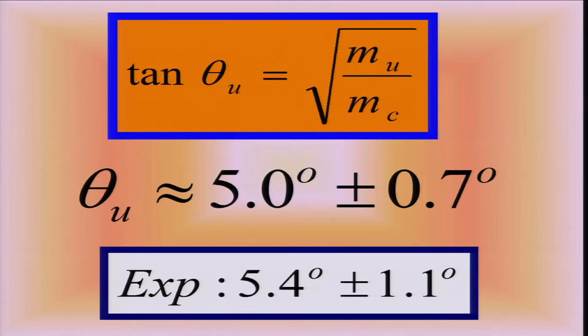From the theory, the quark masses, you just need to know the up and the charm quark mass relatively well. Then you get five degrees. Experiment is completely consistent.